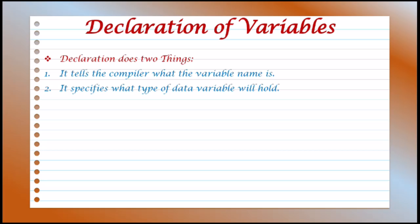A variable which we create can be used to store a value of any data type. That means whatever name we choose for the variable, that name has nothing to do with its type.